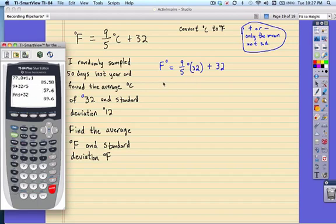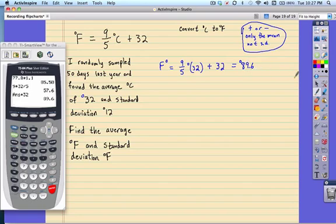So this would equal 89.6 degree Fahrenheit. Let me write it on the other side. Degree Fahrenheit. So when I put the average in, I'm allowed to do that. So how about the standard deviation? The standard deviation.